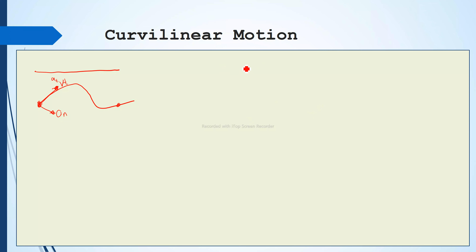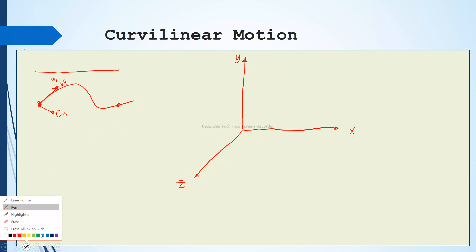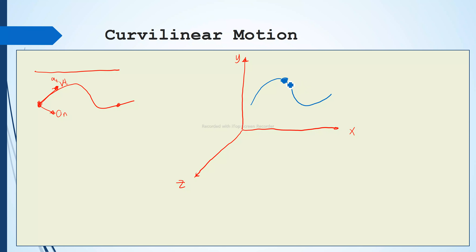So what are the rectangular components? For rectangular components, we consider the three axes — or at least the 2D axes — that we know from previous years: we have the X axis, the Y axis, and the Z axis. We can describe the path or the motion of a particle moving along a curved line using these axes. We can describe its position, velocity, and acceleration using rectangular components.